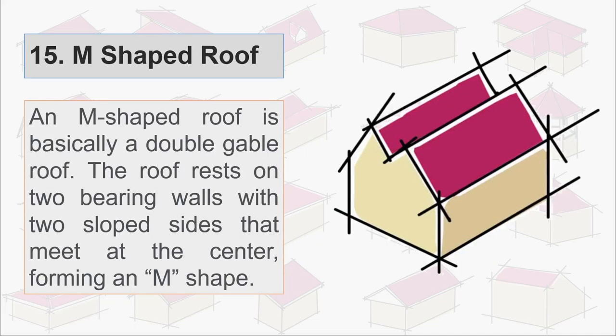Fifteenth is M shaped roof. An M shaped roof is basically a double gable roof. The roof rests on two bearing walls with two sloped sides that meet at the center, forming an M shape.